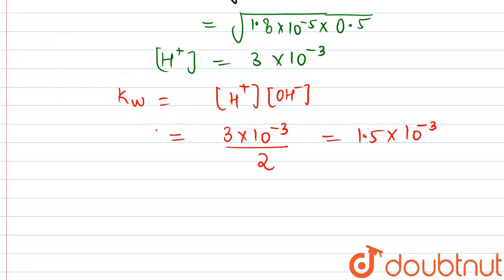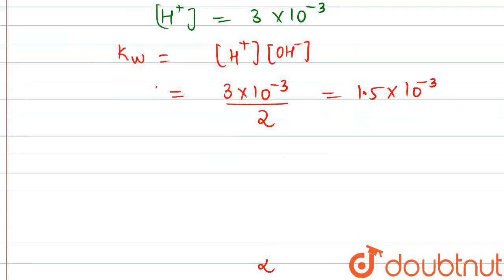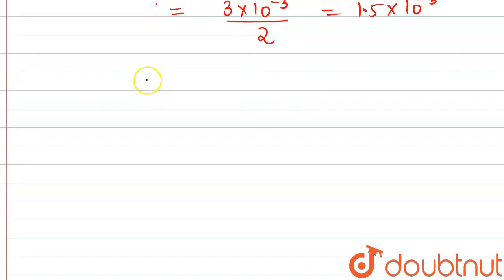Now it is given in the question to double the hydroxide ion concentration. So keeping that in mind, we have to determine the volume. We will apply the same formula: 1.5 × 10^-3 will be equal to square root of Ka multiplied by c2.